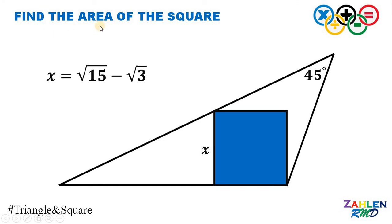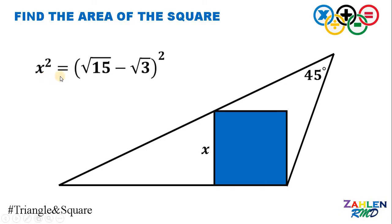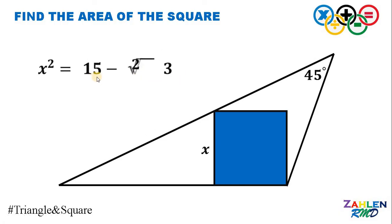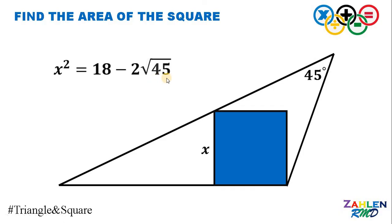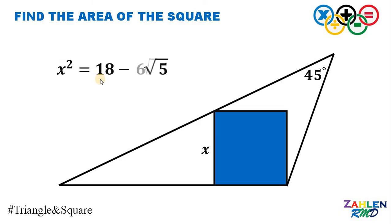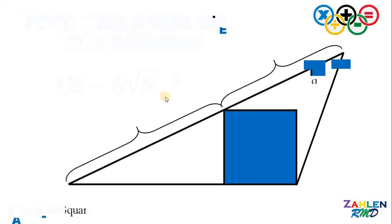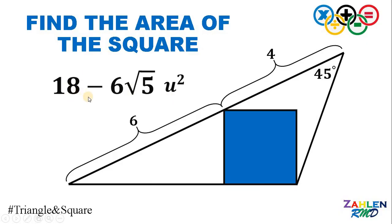We are now ready to find the area of the square. Squaring both sides: x² = (√15 − √3)² = 15 − 2√45 + 3. Since 15 + 3 = 18, and √45 = 3√5, we get x² = 18 − 6√5. Therefore, the area of the square in this figure must be equivalent to 18 − 6√5 square units. And as always, we are done.